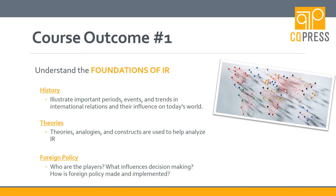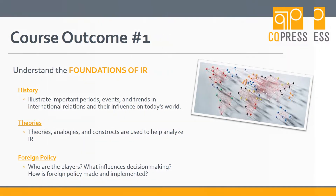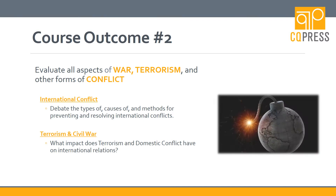Finally is foreign policy. Learning how the sausage is made is important — the process and specifics around key players. But equally important are the influences around decision-making, things like public opinion, the role of bureaucracies, and special interest groups.